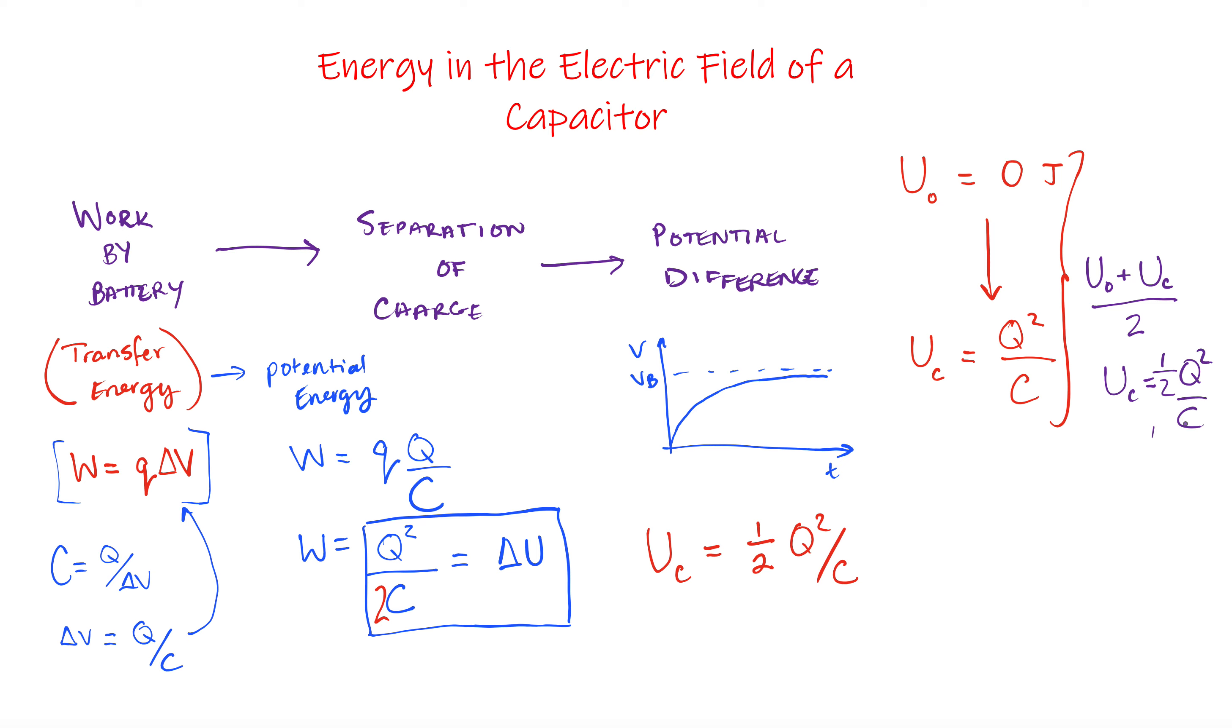Now another expression that we'll commonly see here will also actually come out to be that the energy in the capacitor is equal to 1 half times C V squared. And you can see how that would come into play here by just doing another substitution from the original capacitance equation.